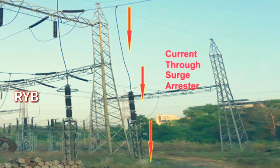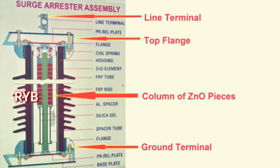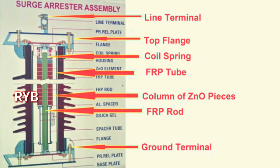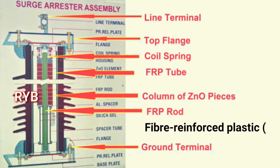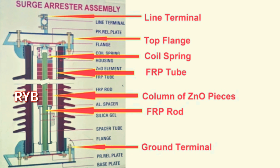In a substation, the lightning arrestor or surge arrestor is connected with one terminal to the line and another terminal to ground. Whenever lightning occurs and high voltage reaches the transformer, the lightning arrestor diverts it. The construction includes a line terminal, top flange, coil spring, column of zinc oxide pieces, ground terminal, and FRP rod — these are the different parts of a metal oxide semiconducting material type lightning arrestor.